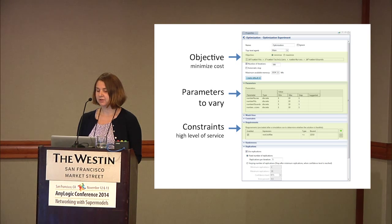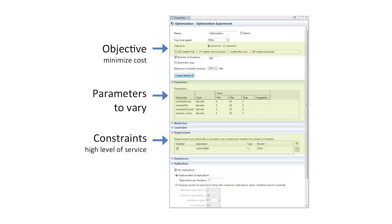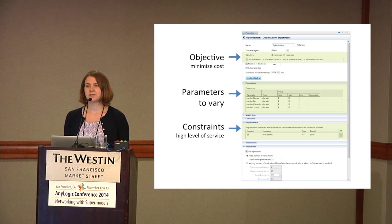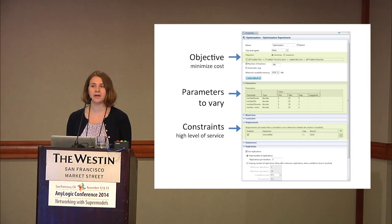AnyLogic includes a very nice UI for setting up optimization runs. You can set up an objective — here I've chosen to minimize cost in our emergency department design. You easily select the parameters to vary: here I've included four parameters — number of nurses, physician assistants, ultrasounds, and technicians — set to vary between 1 and 10 as discrete variables. I've also set a constraint, which you can't do with a manual process: I want a certain level of service, so I've set the length of stay to be no more than two hours. OptQuest can handle these kinds of constraints.